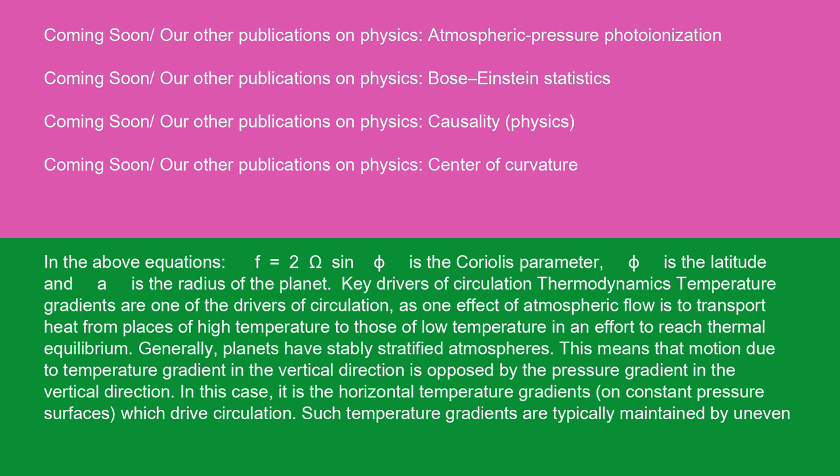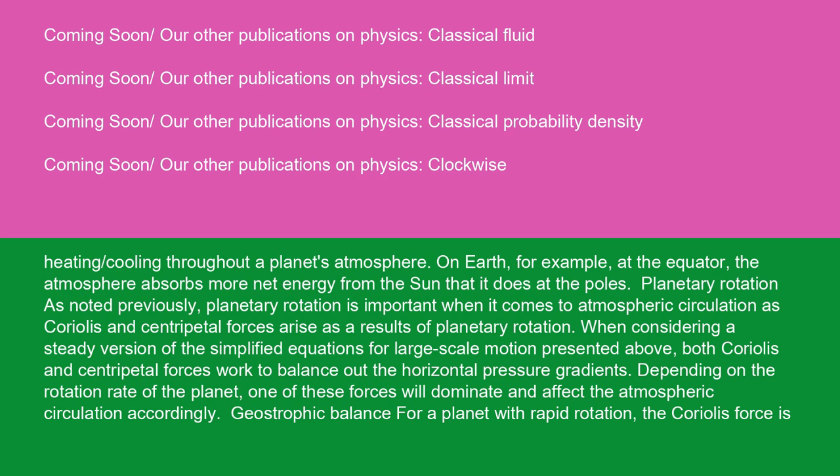Generally, planets have stably stratified atmospheres. This means that motion due to temperature gradient in the vertical direction is opposed by the pressure gradient in the vertical direction. In this case, it is the horizontal temperature gradients on constant pressure surfaces which drive circulation. Such temperature gradients are typically maintained by uneven heating/cooling throughout a planet's atmosphere.